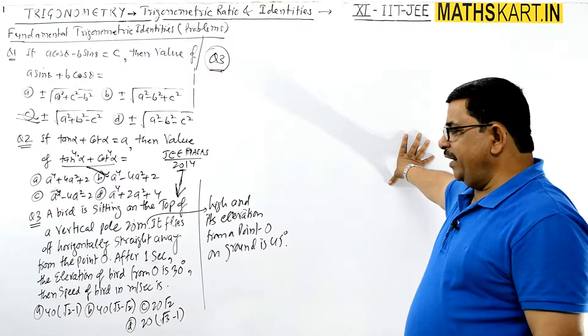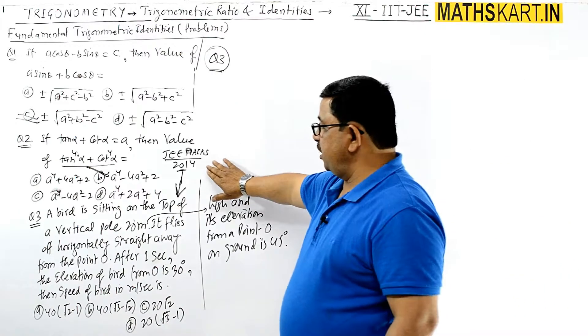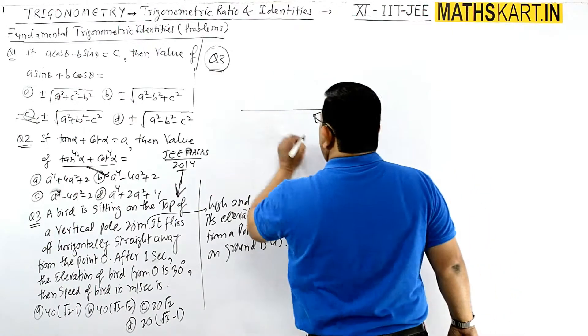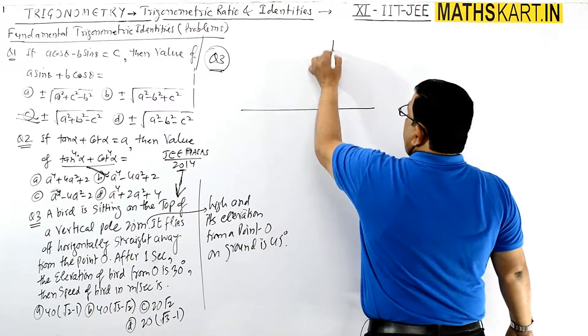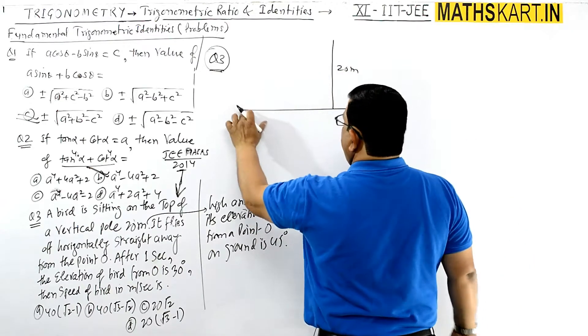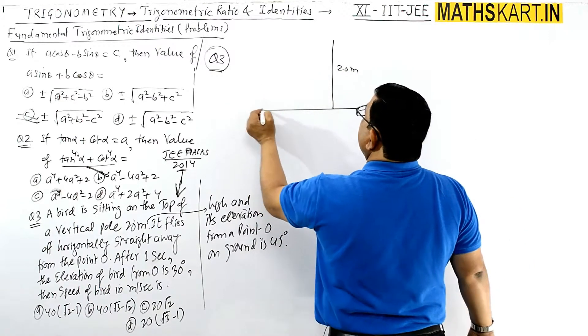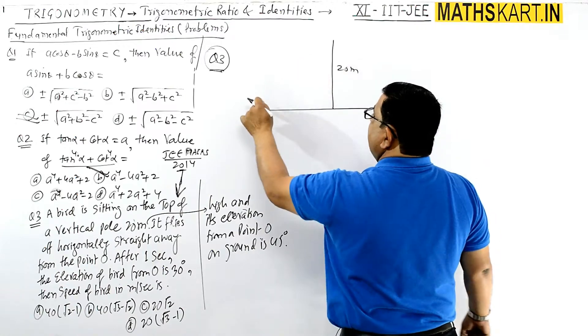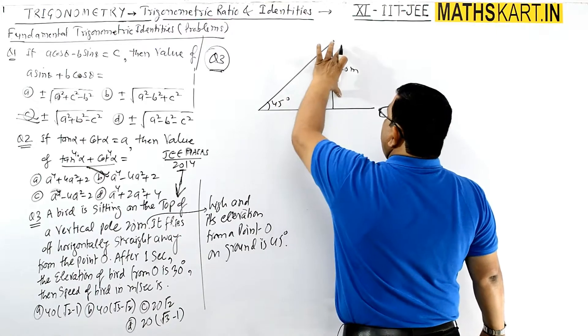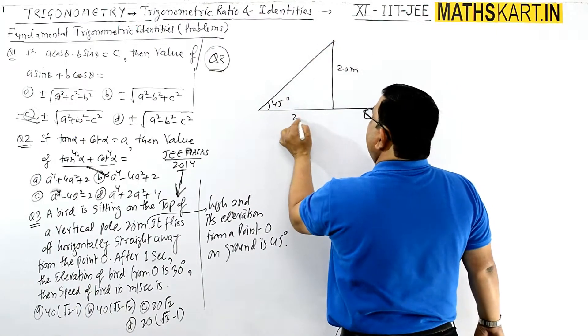Very simple question but asked in JEE Mains 2014. So this is 20 meters and this is also 20 meters, making a 45 degree angle here. So this is the pole here. Point O is 45 degrees angle, so initially if it is 45 degrees then you have 20 meters.